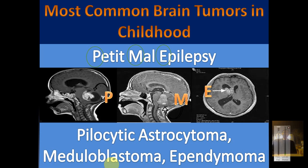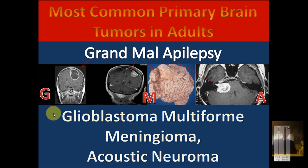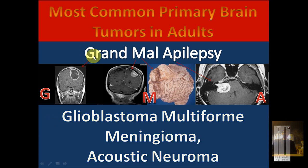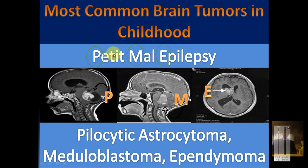Once you've identified the age group, there are four ways they can ask you to identify the specific tumor: they can give you an MRI image, a gross image, a microscopic H&E stain image, or symptoms. You can easily identify which tumor it is from any of these four. After viewing this video, you should be able to answer every brain tumor question on the USMLE.